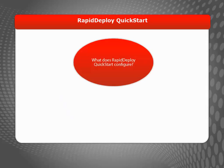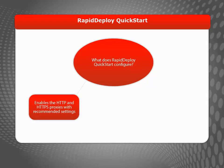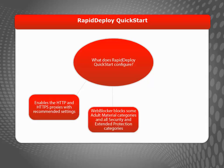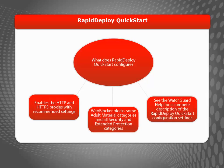So what does Rapid Deploy Quick Start actually configure on the Firebox T10? In addition to the default security settings that apply to all WatchGuard devices, the Rapid Deploy Quick Start configuration enables and configures the HTTP and HTTPS proxies with settings recommended by WatchGuard. It also enables Web Blocker, Gateway Antivirus, and Reputation Enabled Defense with their recommended settings.